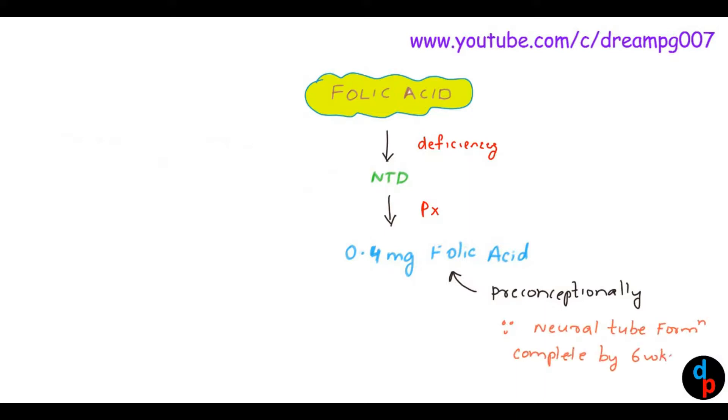So we have to give the folic acid preconceptionally. If the previous pregnancy is affected with neural tube defect, then in the current pregnancy we have to give four milligram of folic acid, that is ten times the normal dose.